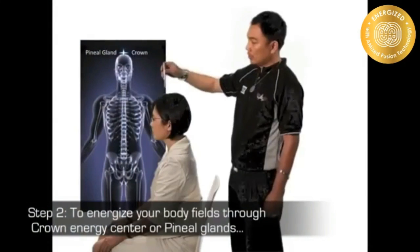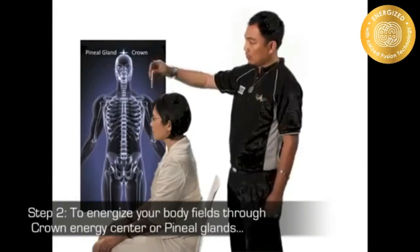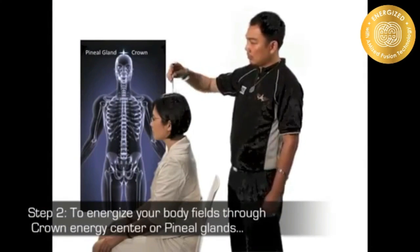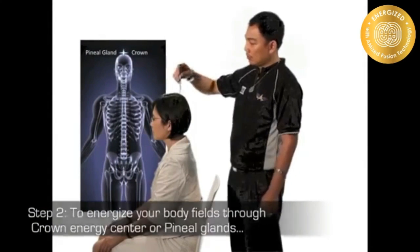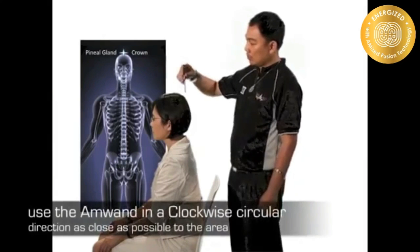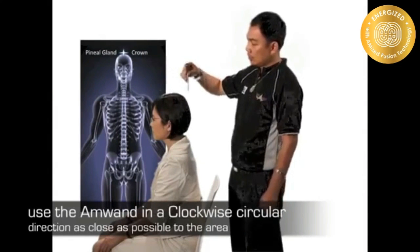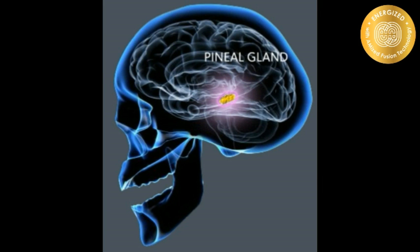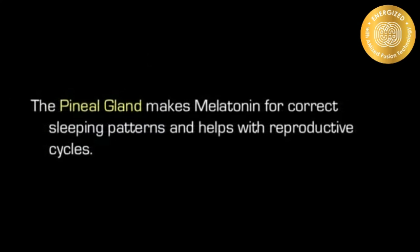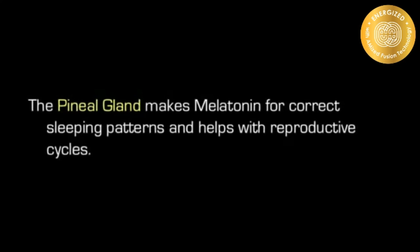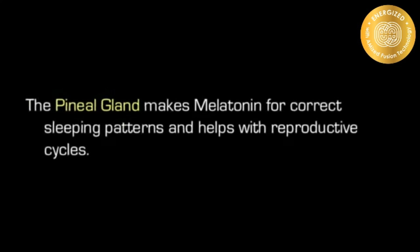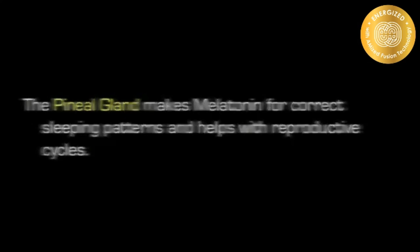Step 2: To energize your body, flow through the crown energy center or pineal gland. Use the M-Wand in a clockwise circular direction as close as possible to the area. The pineal gland makes melatonin to correct sleeping patterns and helps with reproductive cycles.